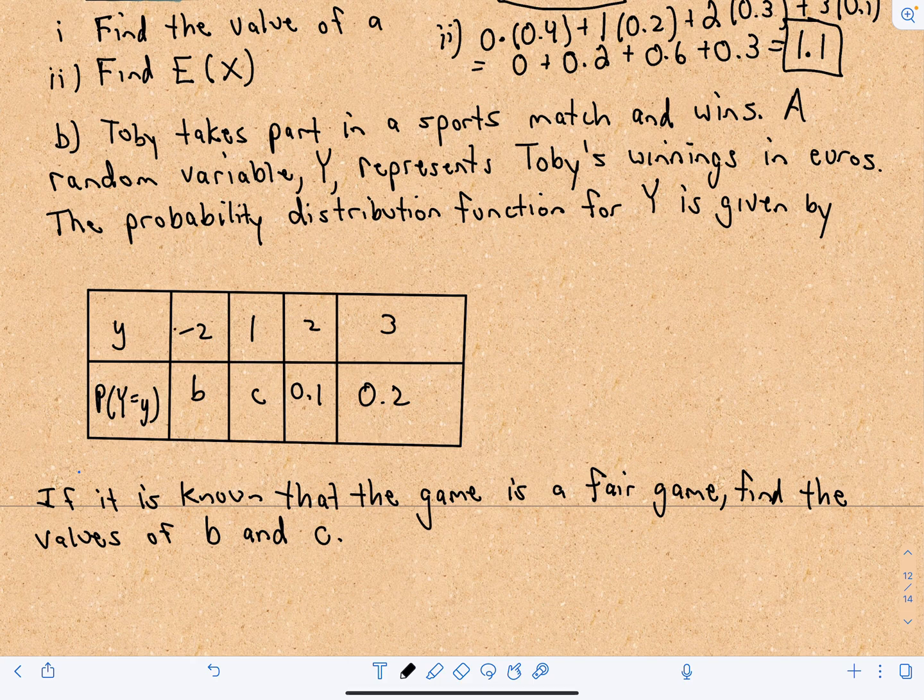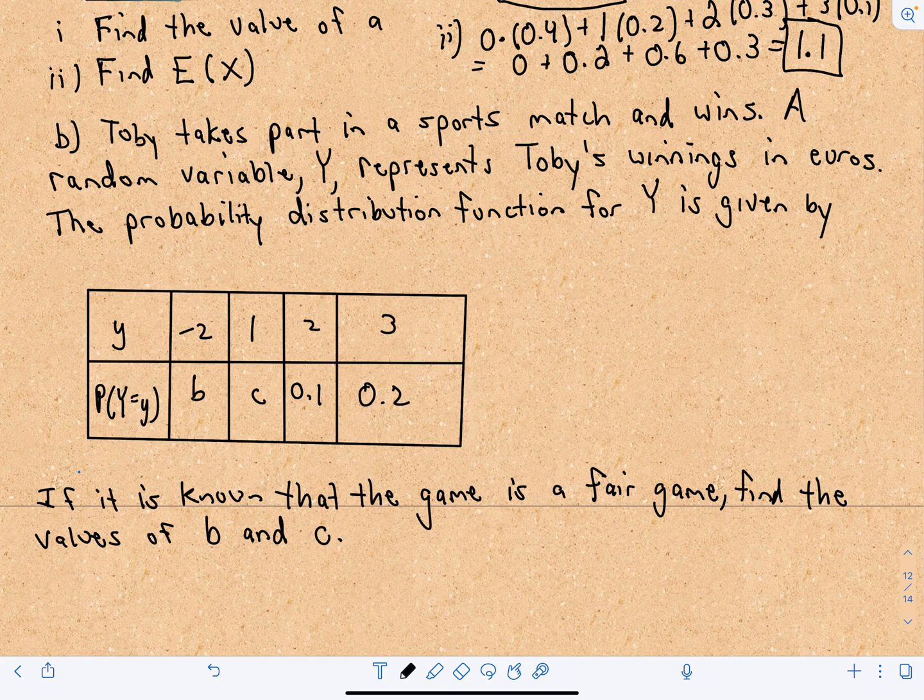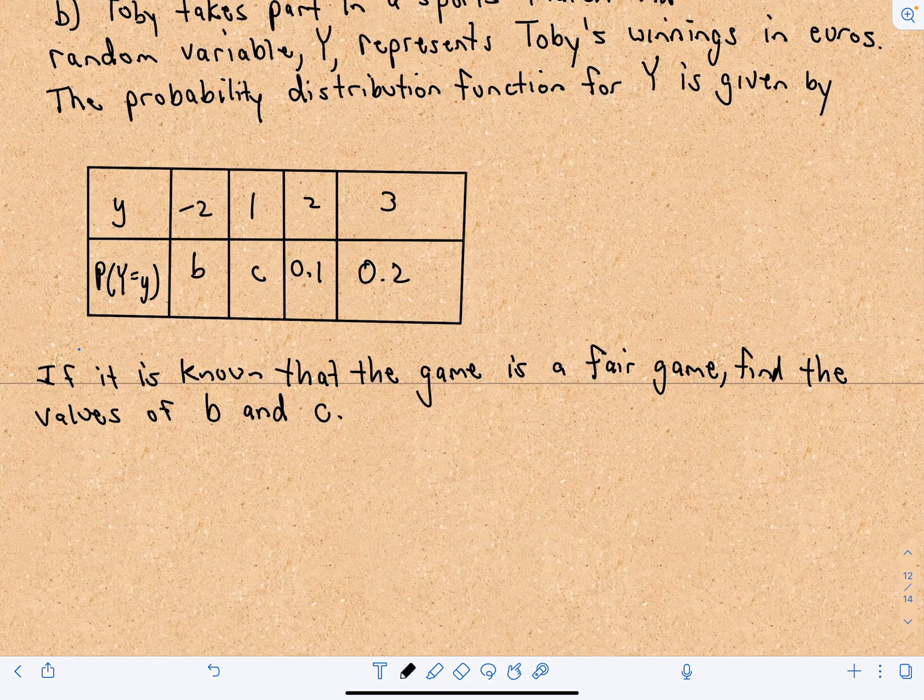The probability distribution function for Y is given here. So it says you can lose 2 euros with a probability of B. Win a euro with a probability of C. Two euros with a probability of 0.1. And three euros with a probability of 0.2. So we know the game is a fair game, and we want to find the values of B and C.